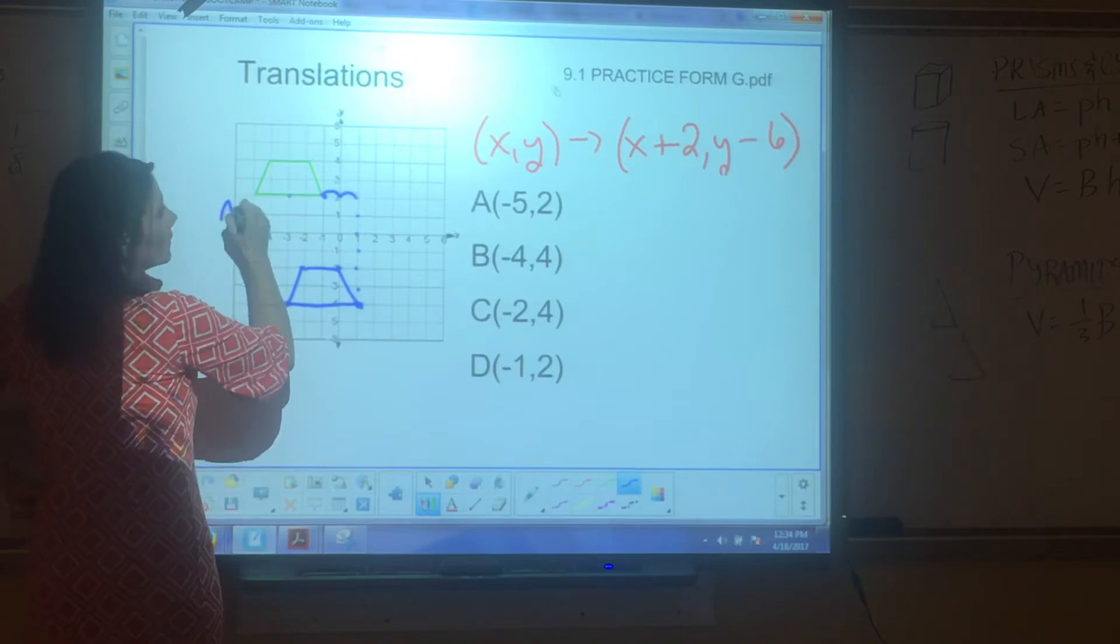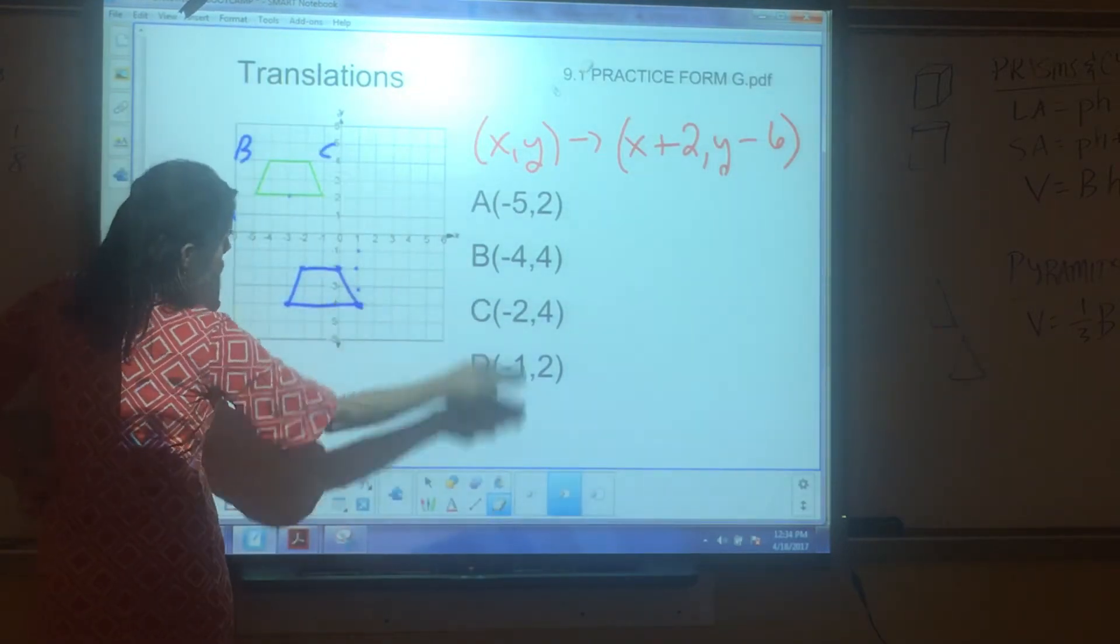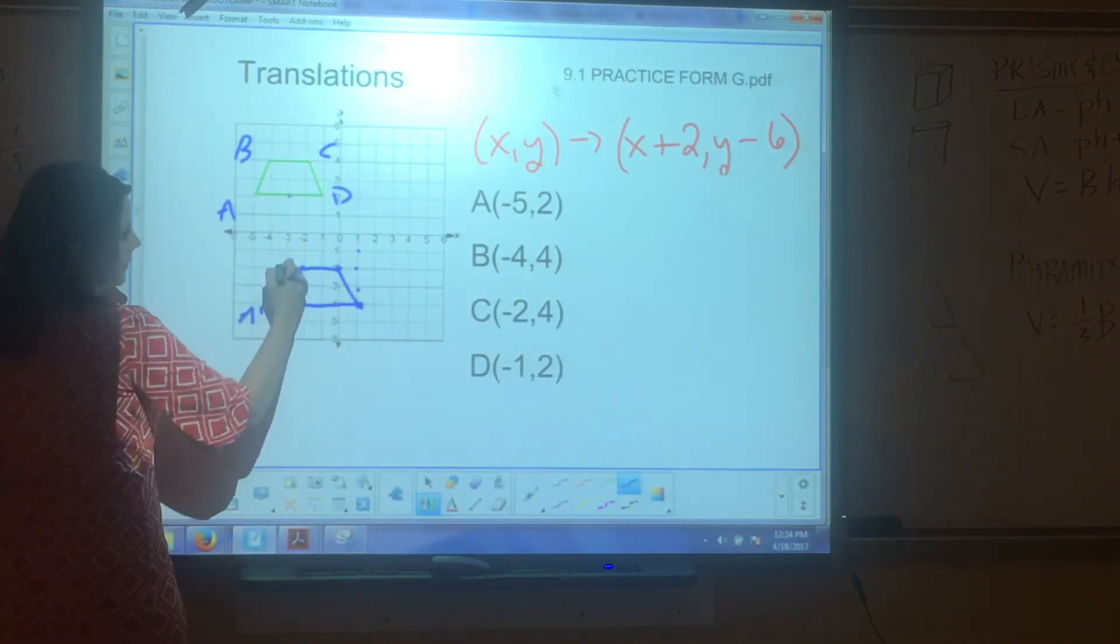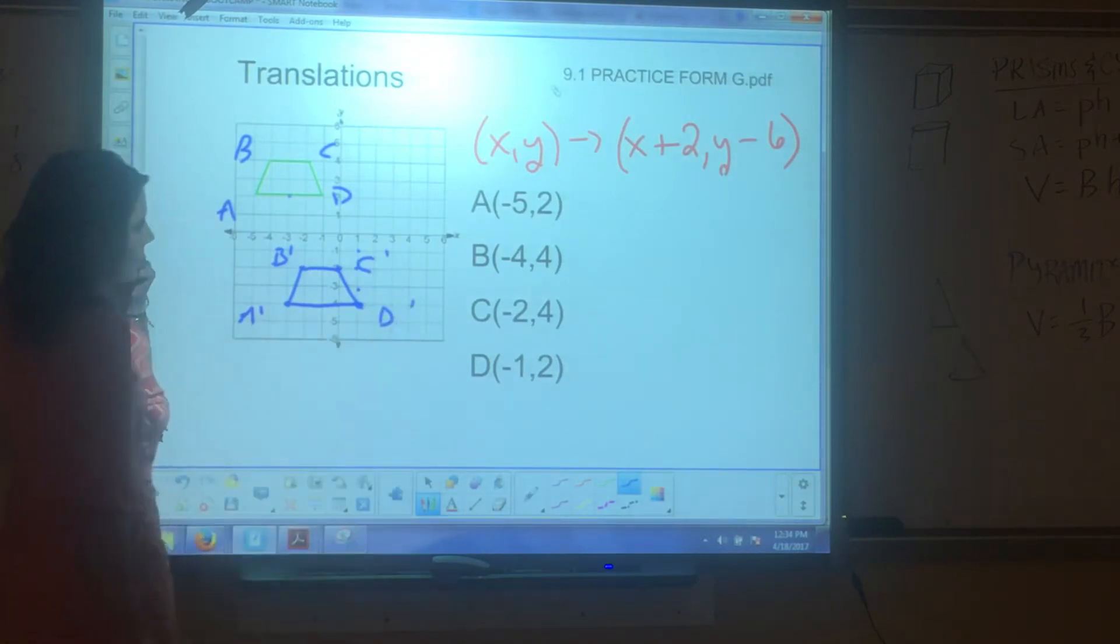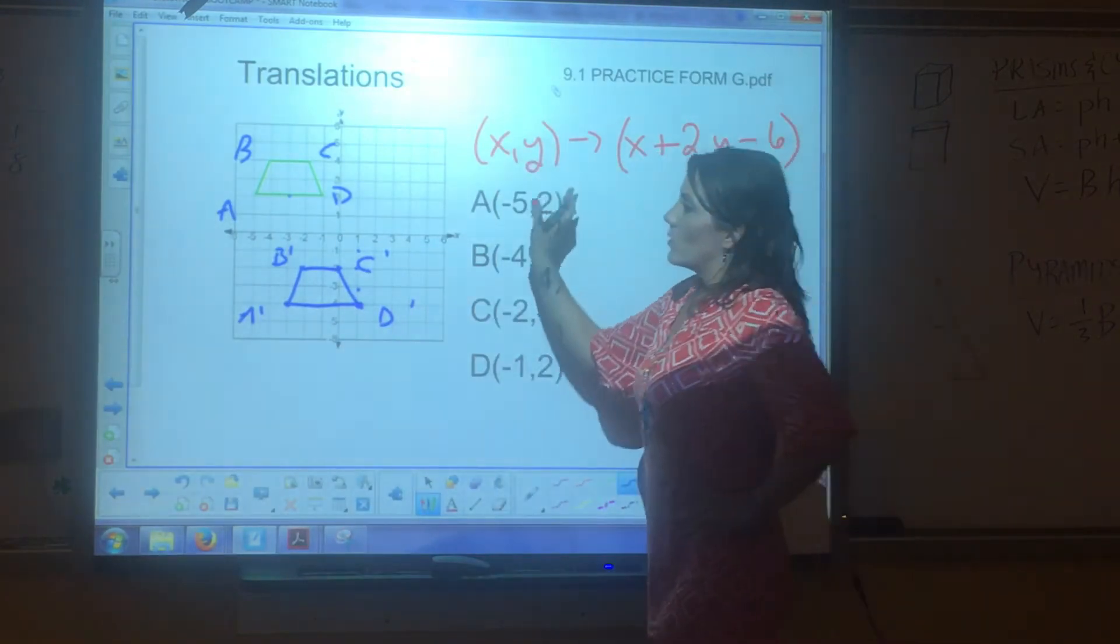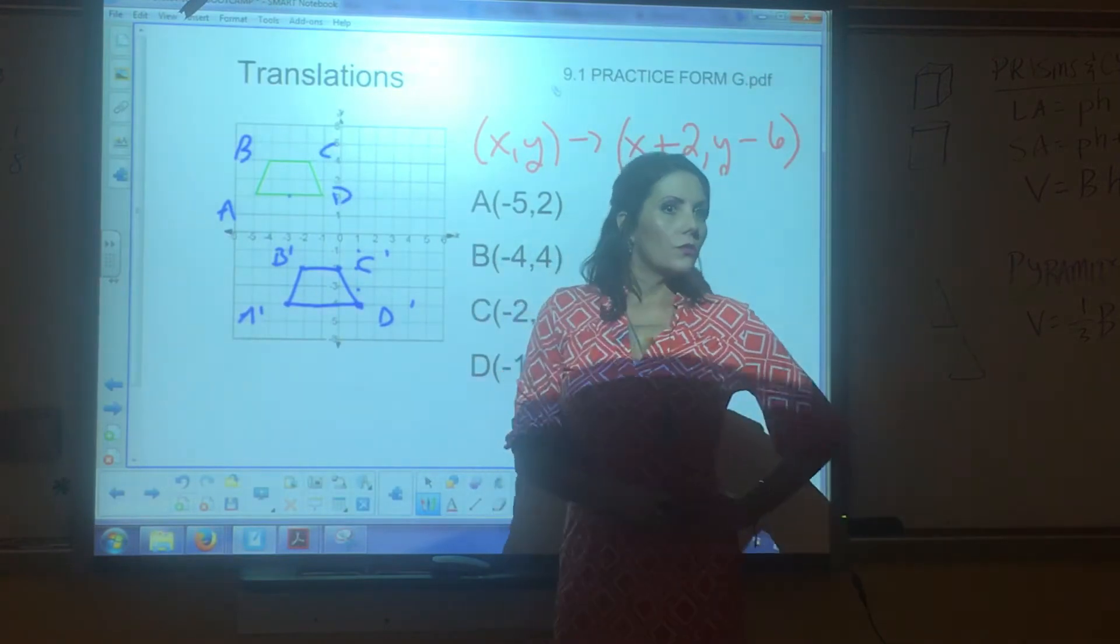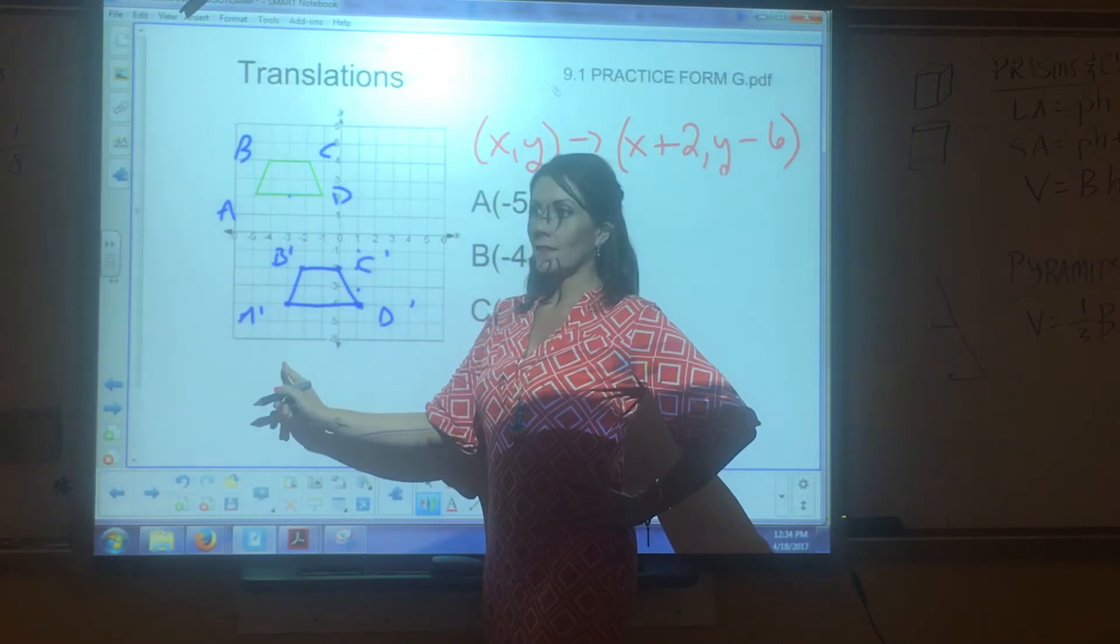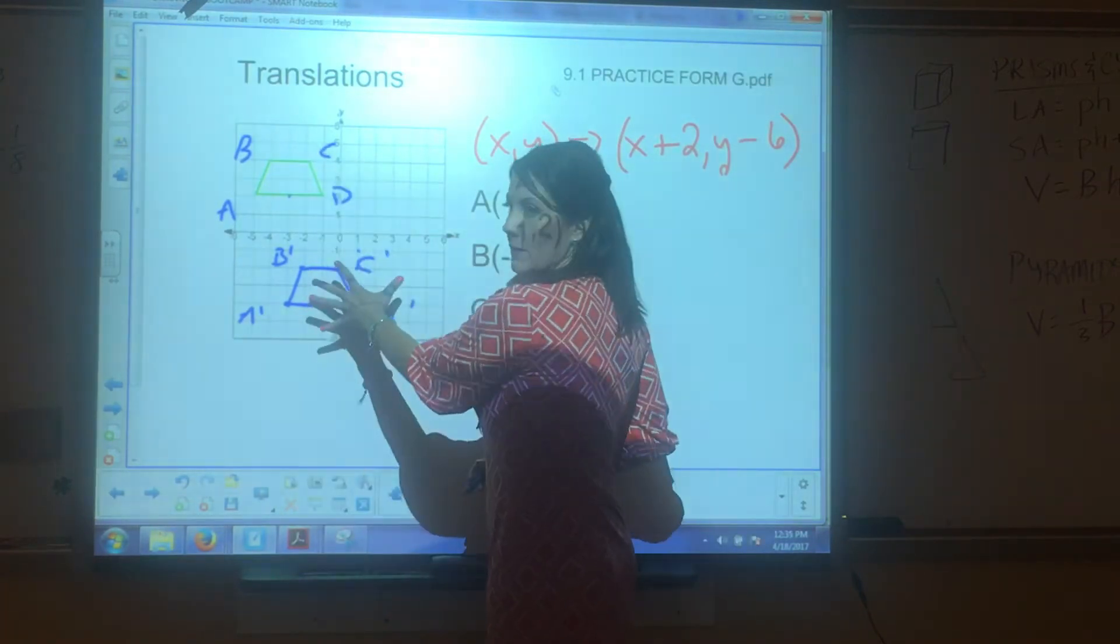Okay? Was this A? Yeah. A, B, C, D. This is A prime, B prime, C prime, D prime. Okay. Now, what do we call this, the original? Original image. Pre-image. Good. And we call this? Post-image. The image. Okay? So, pre-image, image. That's it.